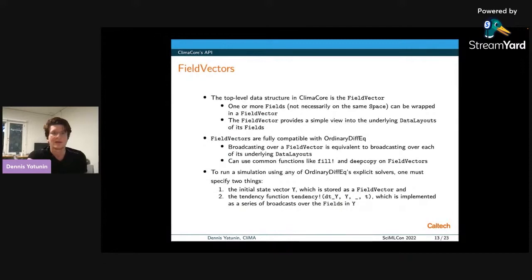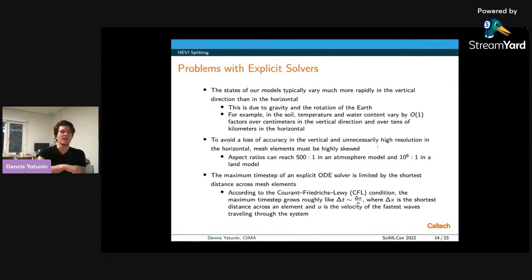So on top of fields, we have this highest-level data structure called the field vector, which contains one or more fields, not necessarily on the same discretized space. And this field vector provides a simple view into the underlying data layouts of those fields that it wraps. And it's fully compatible with ordinary DiffEq. You can broadcast over a field vector, and that's equivalent to broadcasting over each of its underlying data layouts. And you can also use standard functions like copy, deep copy, fill, and so on. So everything that gets run internally by ordinary DiffEq is defined for field vectors. So to run a simulation using any of ordinary DiffEq's explicit solvers, we just need to specify two things. A field vector y, which denotes the initial state of our system, and a tendency function, which takes in the field vector y and sets another field vector, which denotes the time derivative of y. And this is always implemented as a series of broadcasts over the different fields in y, typically using various differential operators.